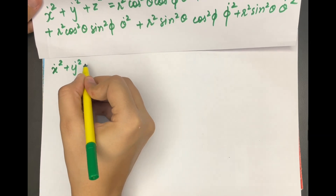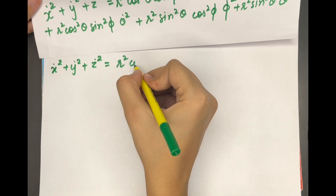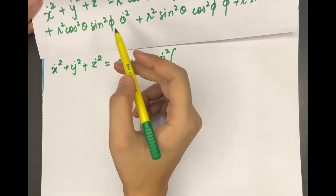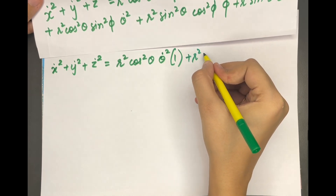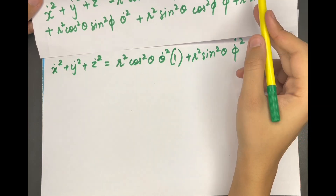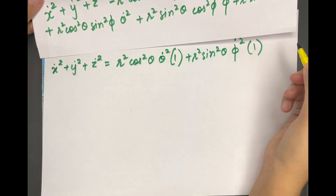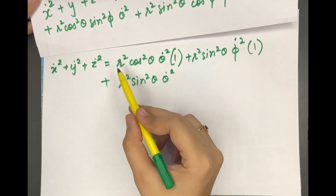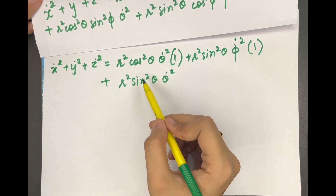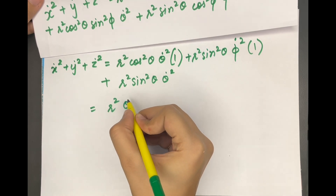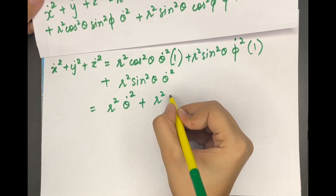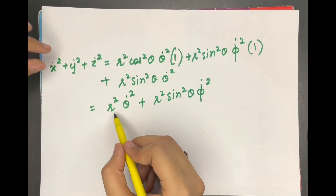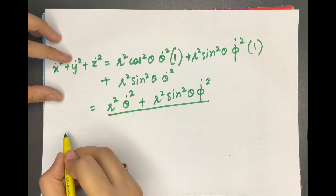So ẋ² + ẏ² + ż² becomes r² cos²θ θ̇² (cos²φ + sin²φ) + r² sin²θ φ̇² (sin²φ + cos²φ) + r² sin²θ θ̇². Since cos²φ + sin²φ = 1, this simplifies to r² cos²θ θ̇² + r² sin²θ φ̇² + r² sin²θ θ̇². Taking r² θ̇² common from the first and last terms gives r² θ̇² + r² sin²θ φ̇².